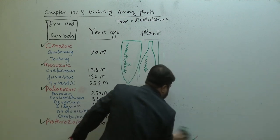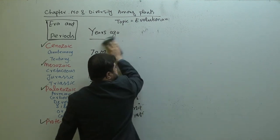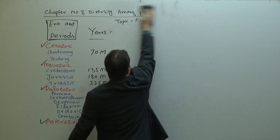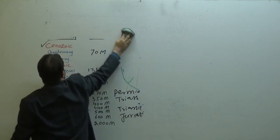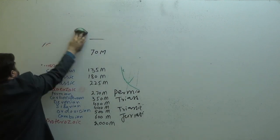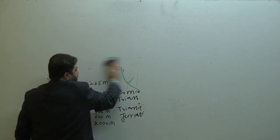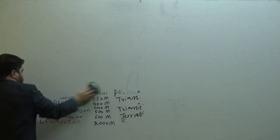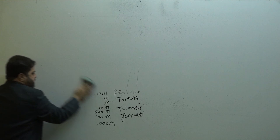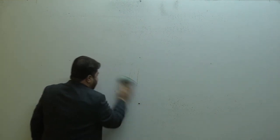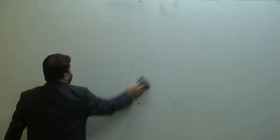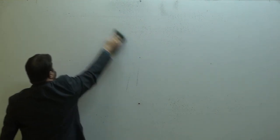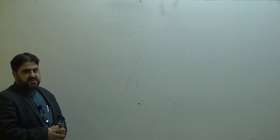Kingdom Plantae is divided into vascular and non-vascular plants. Vascular plants are those which have a vascular bundle — xylem and phloem are present. In non-vascular plants, they don't have a vascular bundle.